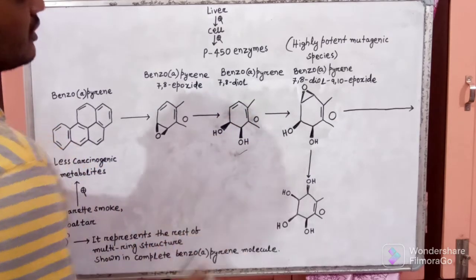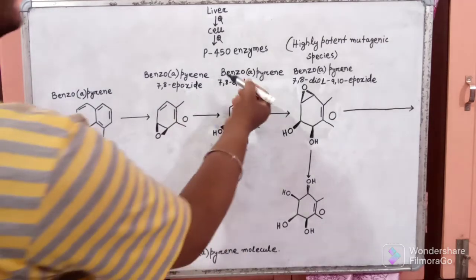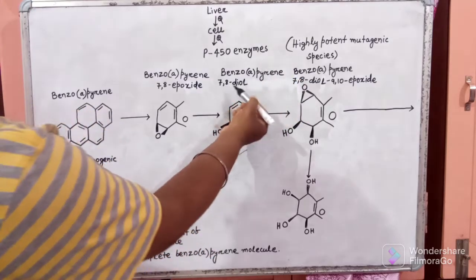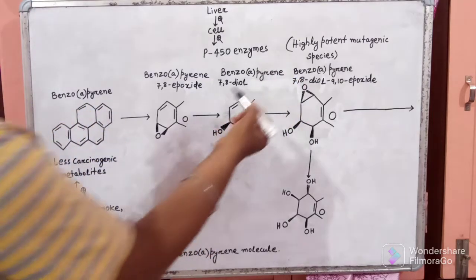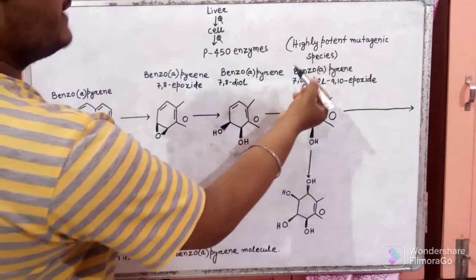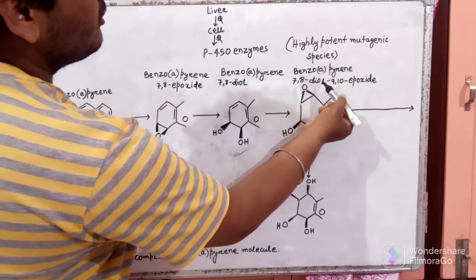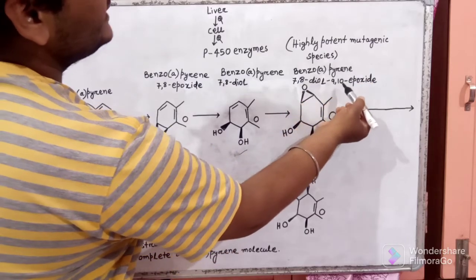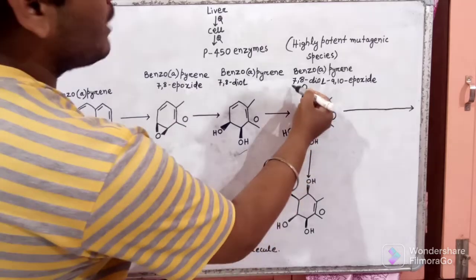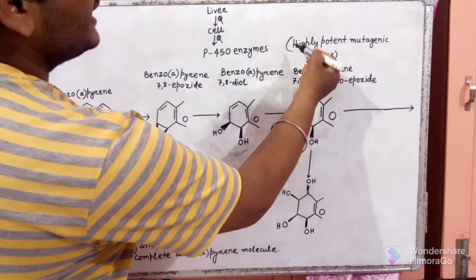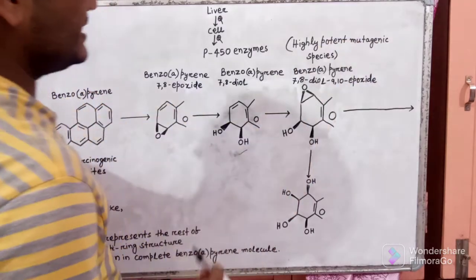This is the structure. Then, Benzo A Pyrene 7,8 Diol is converted into Benzo A Pyrene 7,8 Diol 9,10 Epoxide. This compound is a highly potent mutagenic species.